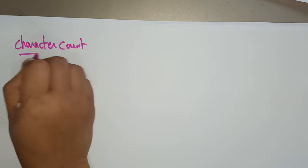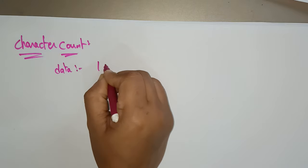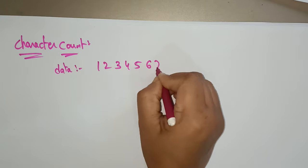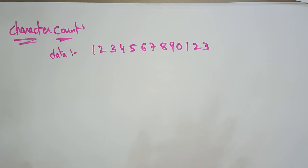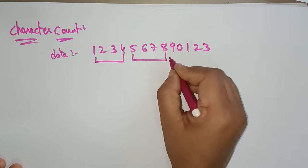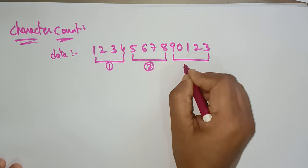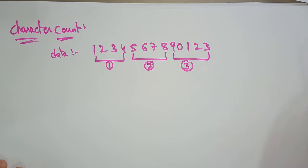Let me explain about character count. Suppose my data is 1, 2, 3, 4, 5, 6, 7, 8, 9, 0, 1, 2, 3. I divided my data into frames: 1 to 4 is one frame, 5 to 8 is another frame, and 9 to 3 is another frame — total 3 frames. This is the sender's message that I want to send to the receiver. The question is what marks the starting and ending of each frame.